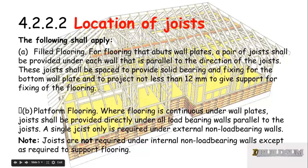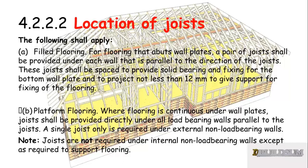Regarding the location of joists for a filled floor (also called a fitted floor): for flooring that abuts wall plates, a pair of joists shall be provided under each wall that is parallel to the direction of the joist. These joists shall provide solid bearing and fixing for the bottom wall plate, and shall project no less than 12mm to give support for fixing of the flooring. For platform flooring where flooring is continuous under the wall plates, joists shall be provided directly under all load-bearing walls parallel to the joists. A single joist only is required under external non-load-bearing walls, and no joist is required under internal non-load-bearing walls except as required to support flooring.